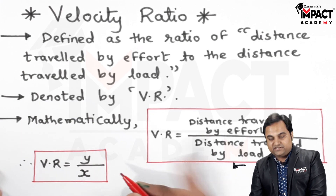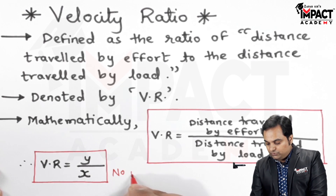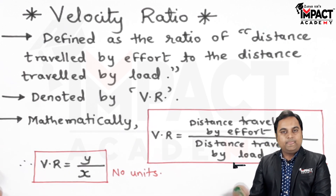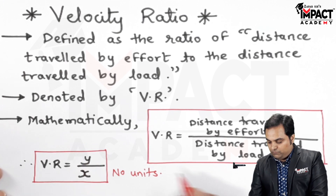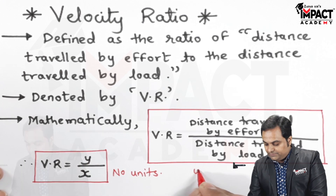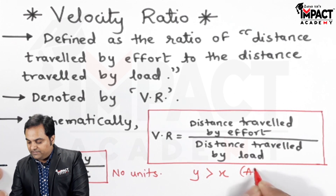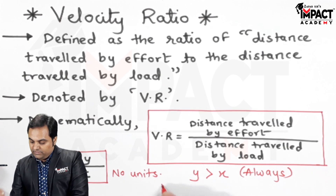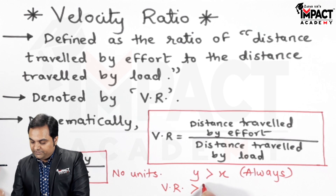Since both are distances, the units get cancelled out, and velocity ratio does not have a unit. As explained, the distance traveled by effort would be greater — since y is greater than x, which is always the case in a simple machine, the velocity ratio will always be greater than 1.